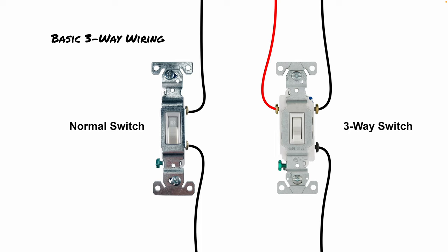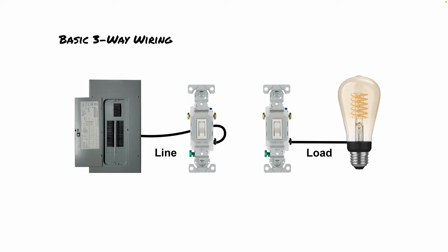I also want to talk about the difference between line versus load. We talk a lot about this when it comes to GFCI receptacles, but it also applies to light switches and especially three-way light switches. Basically, the line is when you have power coming in — so whenever power is coming into something, that's the line. In this example, power is coming directly from the breaker panel into the first switch.